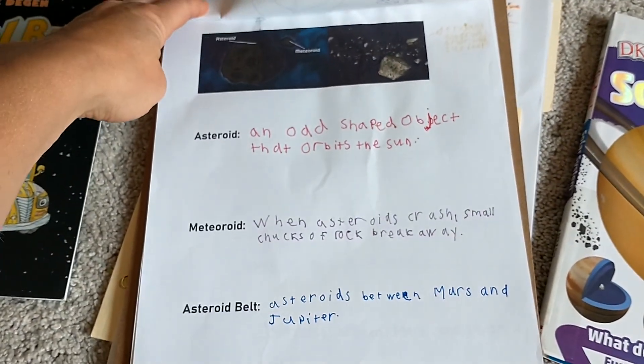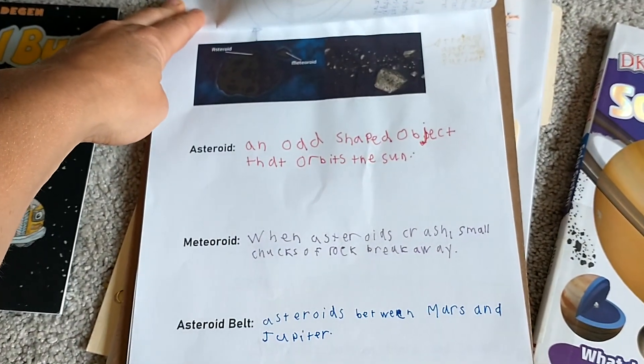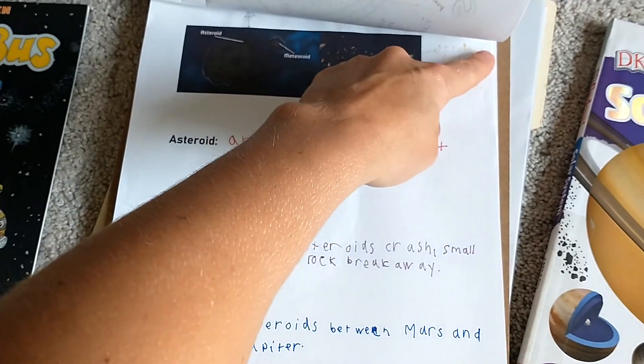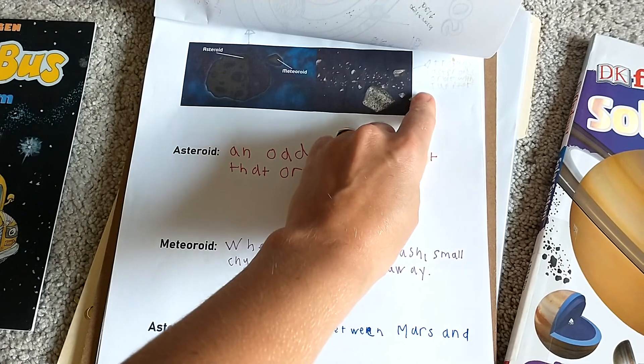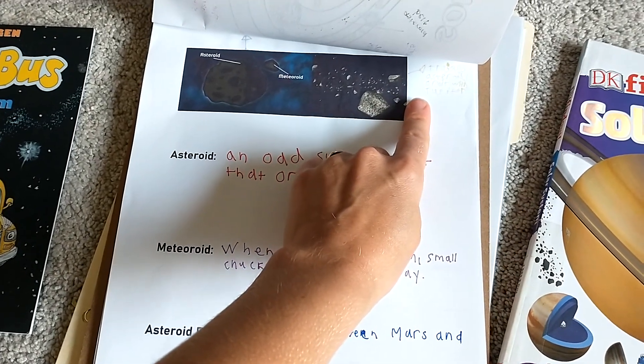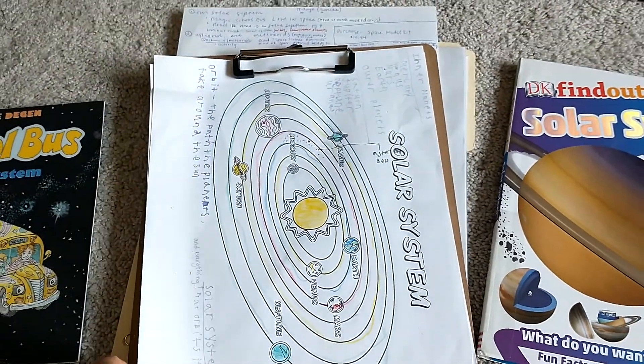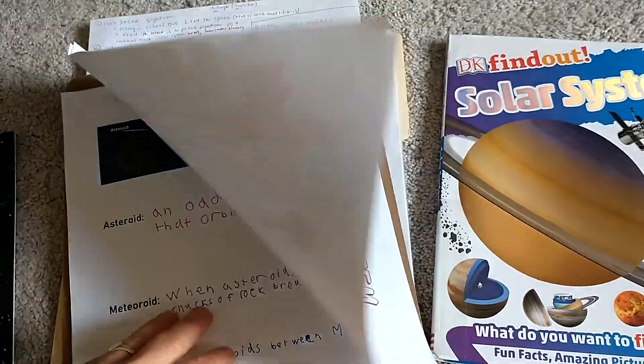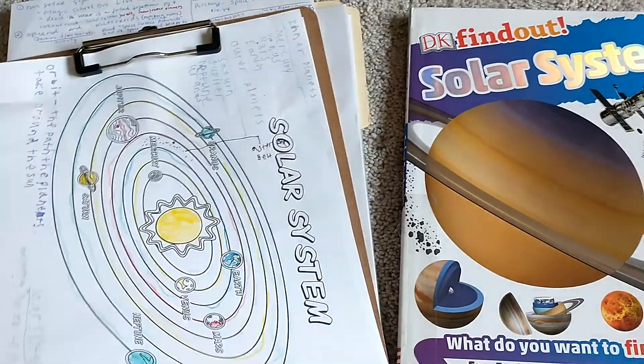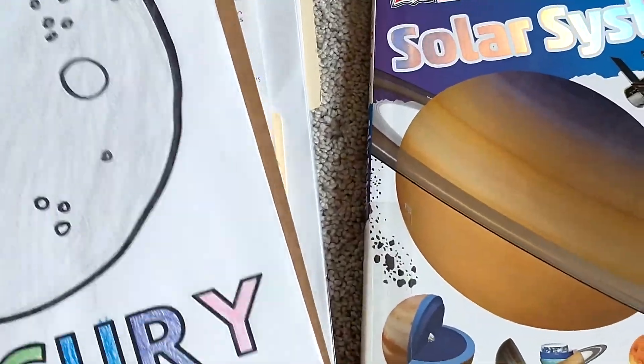asteroid, meteoroid, asteroid belt. And we talked about the Trojan asteroids and we watched a short video on what asteroids look like. So then getting into the different planets.